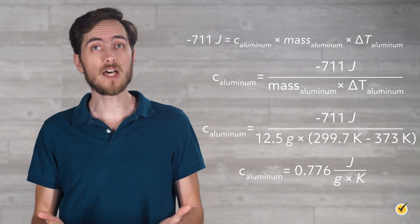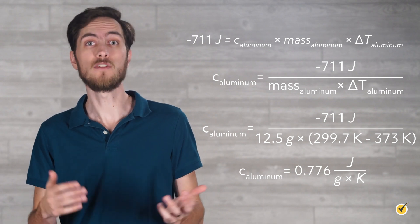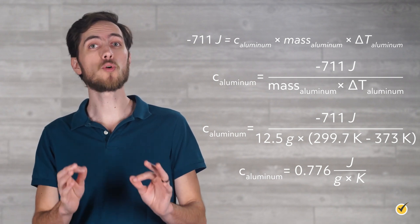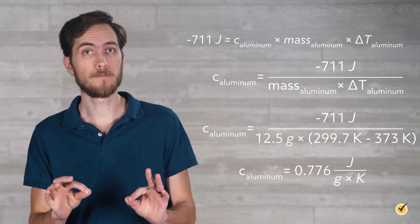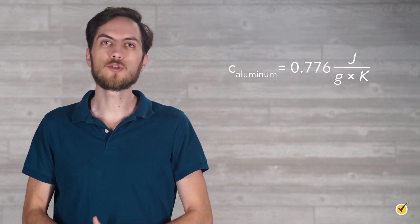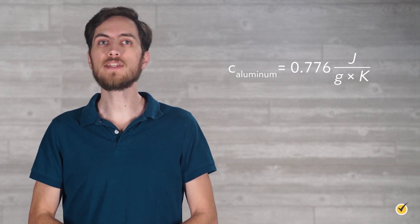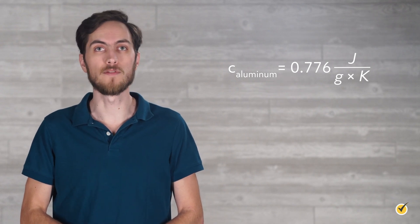If you come up with a negative value for a specific heat capacity, you've made a mistake somewhere, so make sure to keep track of your minus signs. So, our experimental value for the specific heat capacity of aluminum is 0.776 joules per gram kelvin.